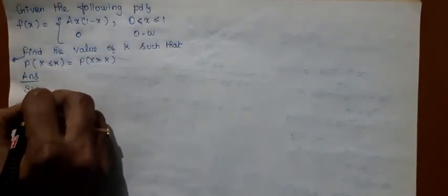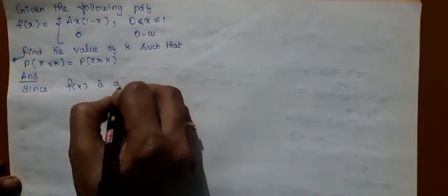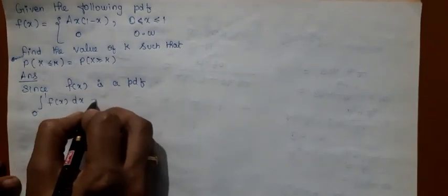To do this, first of all, you should find the value of the constant A. It is given that the function is a PDF — a probability density function. Since F of X is a PDF, when you integrate F over the entire range — which is 0 to 1 — the answer should be 1.